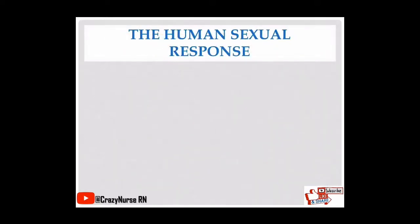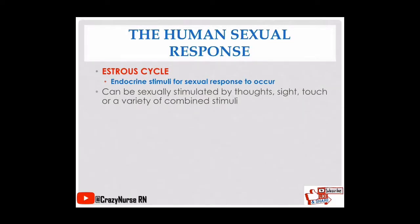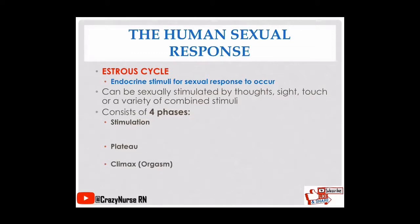Now let's discuss the human sexual response. The endocrine stimuli for sexual response can be triggered by thoughts, sight, touch, or a variety of combined stimuli. It consists of four phases: first, stimulation; next, plateau; third, climax or orgasm; and lastly, resolution or recovery.